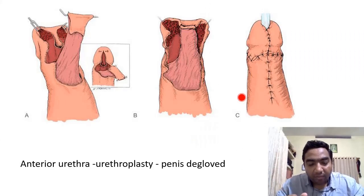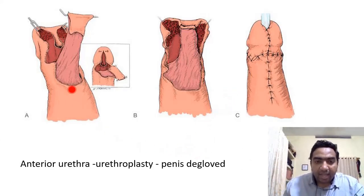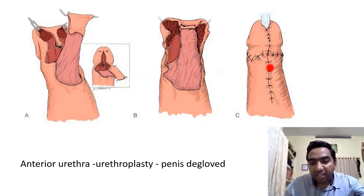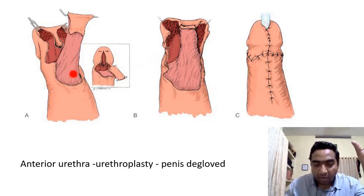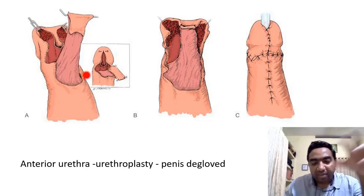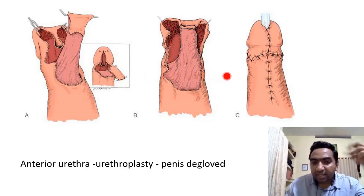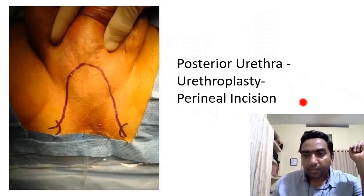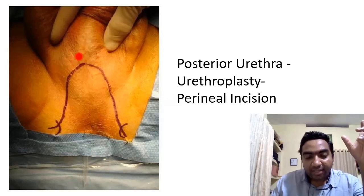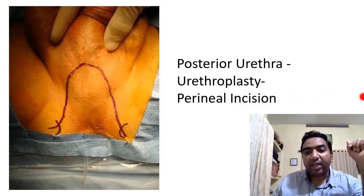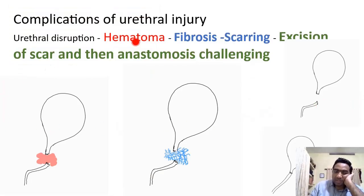In delayed repair of the penile urethra, anterior urethroplasty is done — we repair the urethra with the surrounding tissue. The entire penis can be degloved and the deep fascia of the penis harvested to repair the urethral defect. For posterior urethral injury, we place a perineal incision below the scrotum to approach the urethra and repair it.